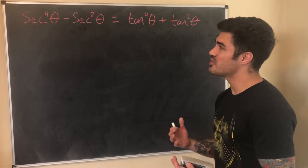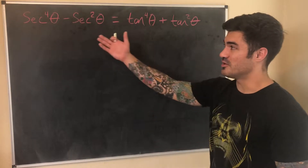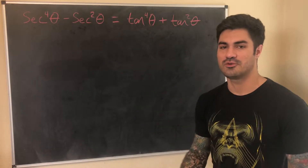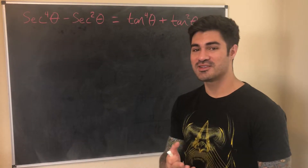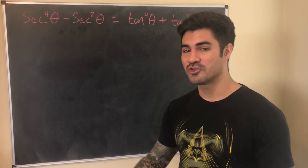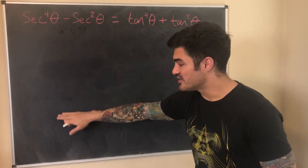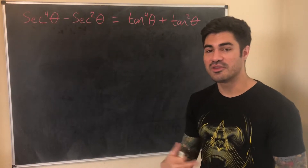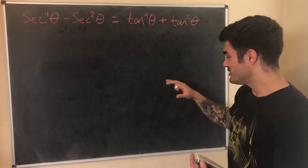Since this is the first example, let's talk about what it means to establish an identity. We're given a statement that two things are equal, and establishing the identity means proving it — showing these two things are in fact equal. We take one side of the equation, either left or right, and use algebra as well as identities we know are true — reciprocal, Pythagorean, half-angle, double-angle — and modify that side until we get exactly what's on the other side.